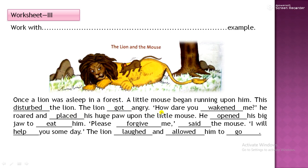The lion got angry and said, 'How dare you waken me?' This is about the lion and the mouse. The lion's sleep was disturbed and he was angry. He was about to eat the mouse. The mouse requested and pleaded, 'Let me go. Don't kill me. I will help you someday.' The lion roared and placed his huge paw upon the little mouse.